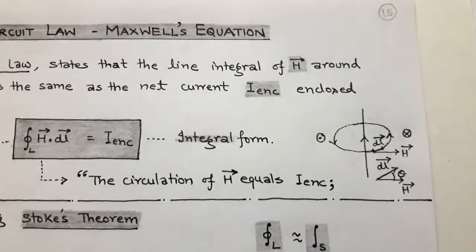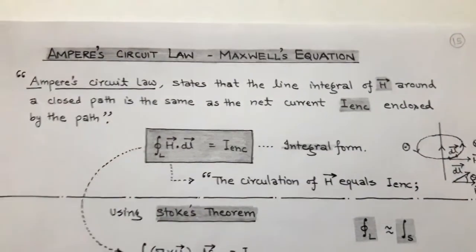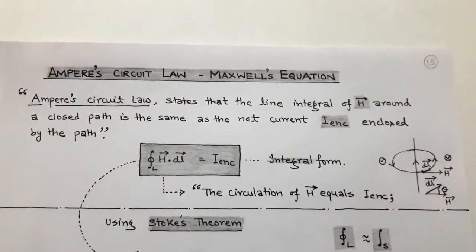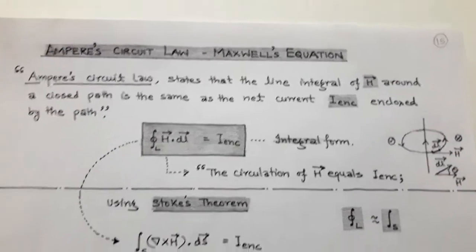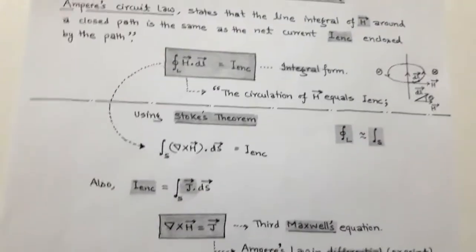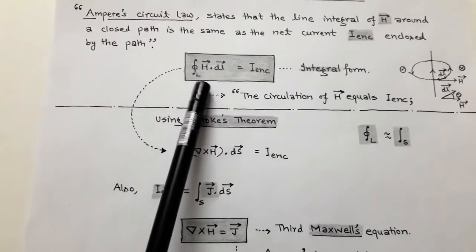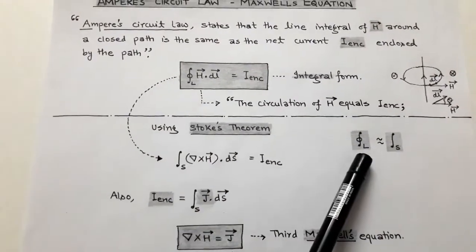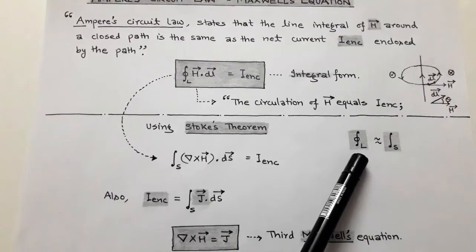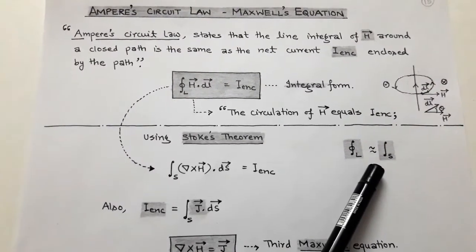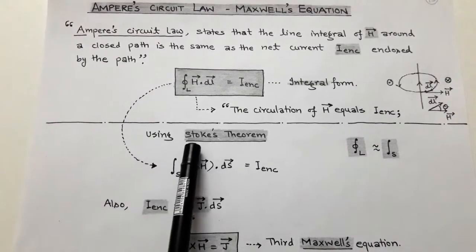Ampere's circuit law is analogous to Gauss's law in the case of electrostatics. Since there is a closed path, and we know that a closed path defines some open surface, there is a relationship between the closed path and the surface. That relation is given by Stokes' theorem.